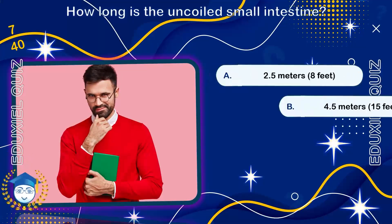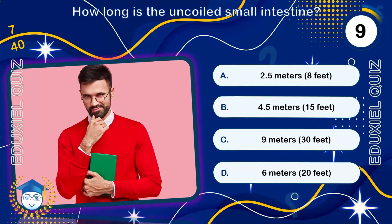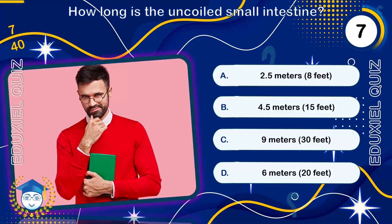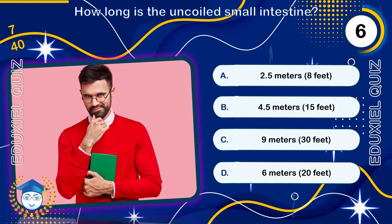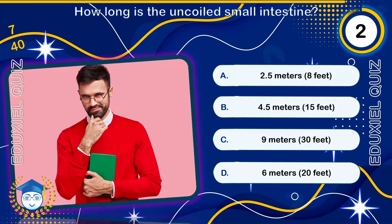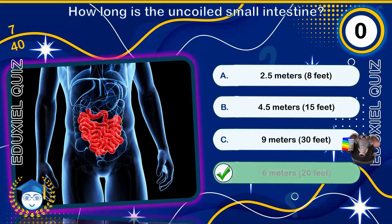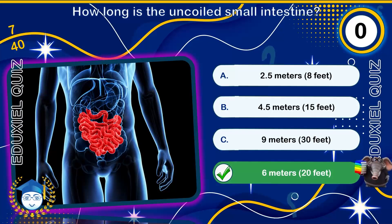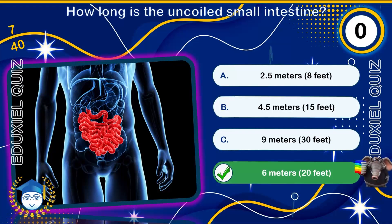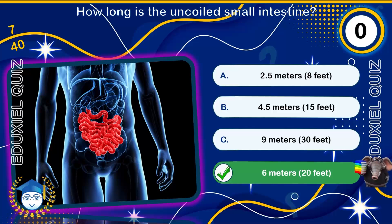How long is the uncoiled small intestine? 6 meters, 20 feet. The small intestine is the longest section of the digestive tract, capable of absorbing nutrients along its vast, convoluted surface area.